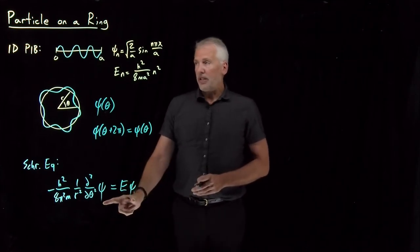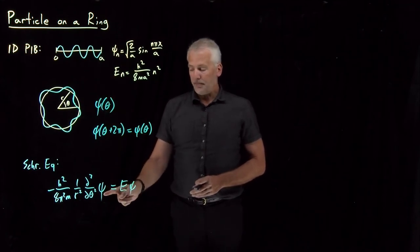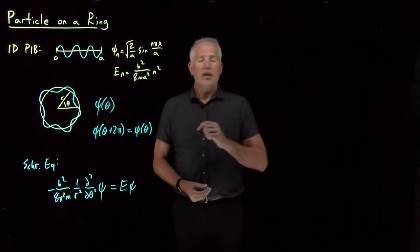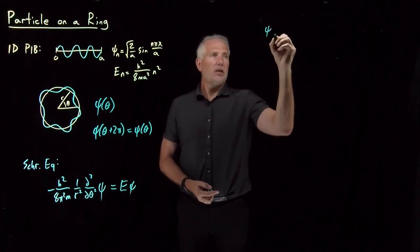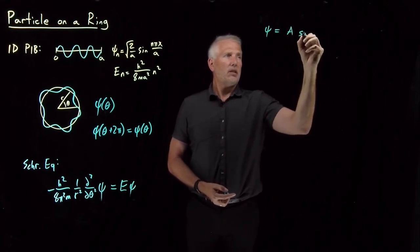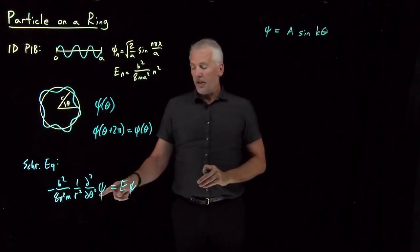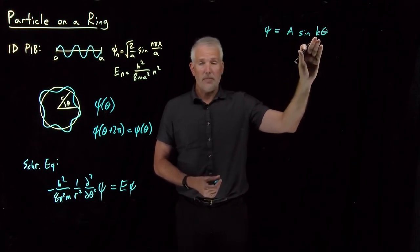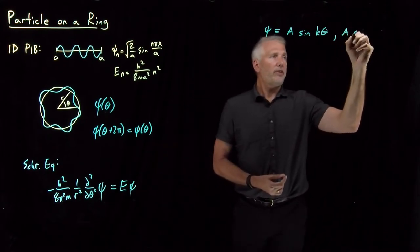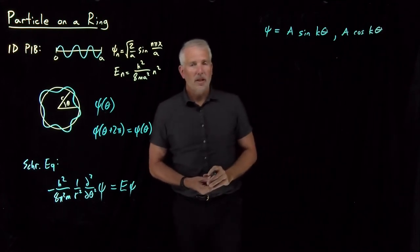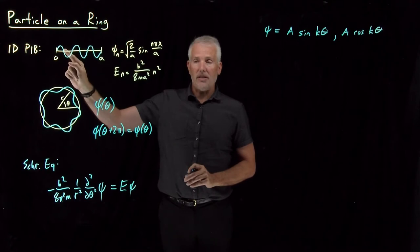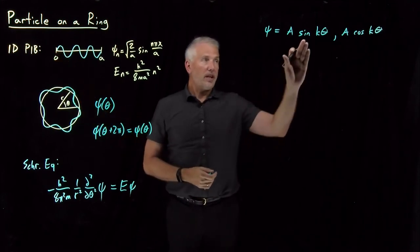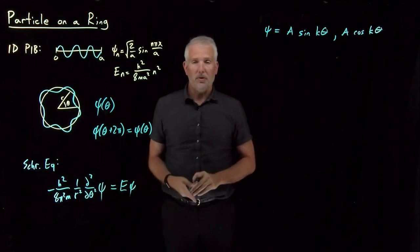This basically boils down to the same problem as particle-in-a-box: we're looking for a function whose second derivative gives back the same function with some constants and a negative sign. Just like before, trigonometric functions like sine work. So sine of some constant times theta is a good solution. Unlike the previous case, cosine also works. Cosine didn't work before because the wave function had to be zero at the edge of the box — sine is zero at x=0, cosine is not. So cosine is also a valid solution for the particle-on-a-ring.